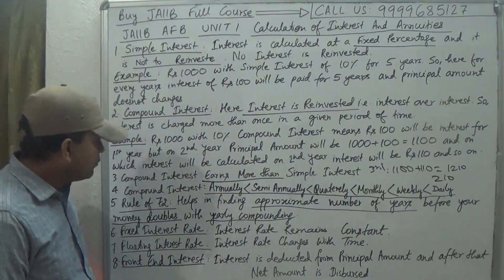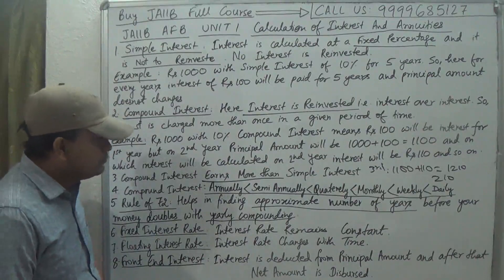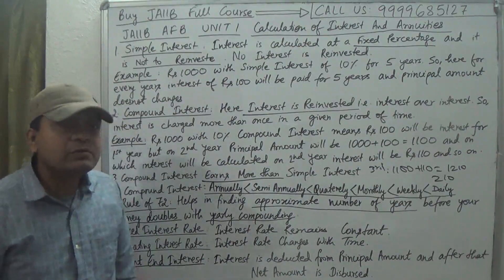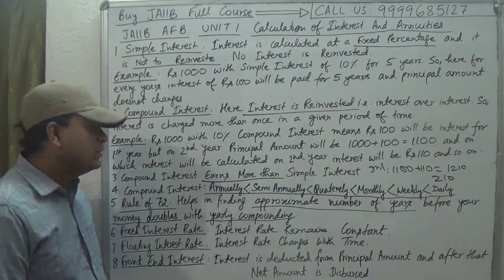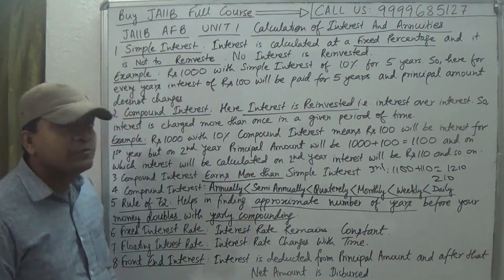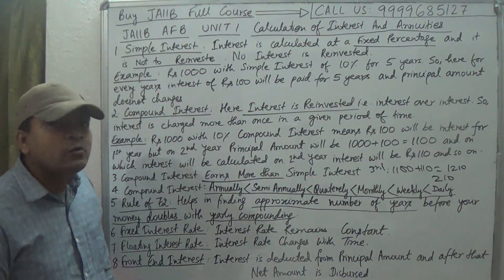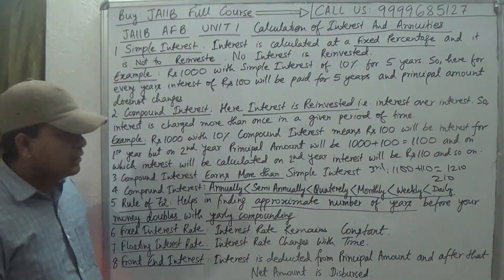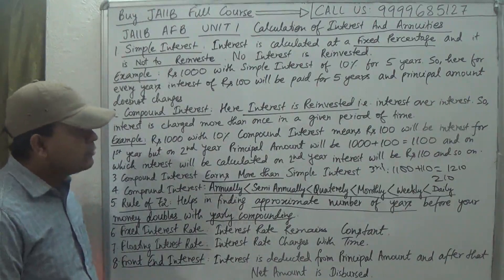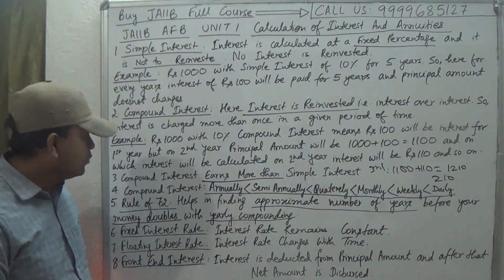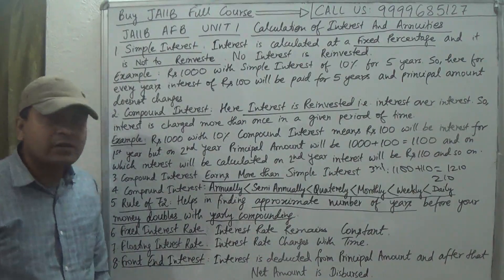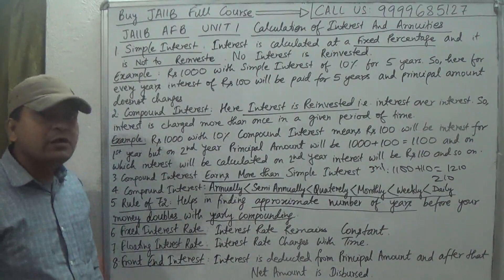Rule of 72: This rule helps in finding the approximate number of years required to double your money with yearly compounding at a fixed interest rate.